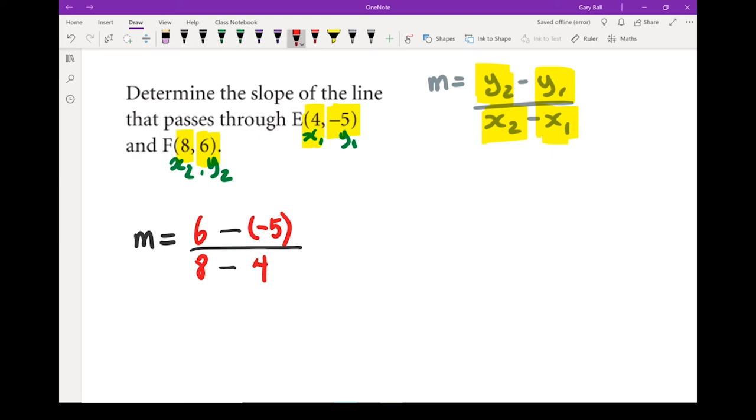Be careful. The most common mistakes are mistakes in sign. Let's deal with that double negative because I don't like dealing with it. That 6 doesn't change. Negative times a negative gives me a positive 5.